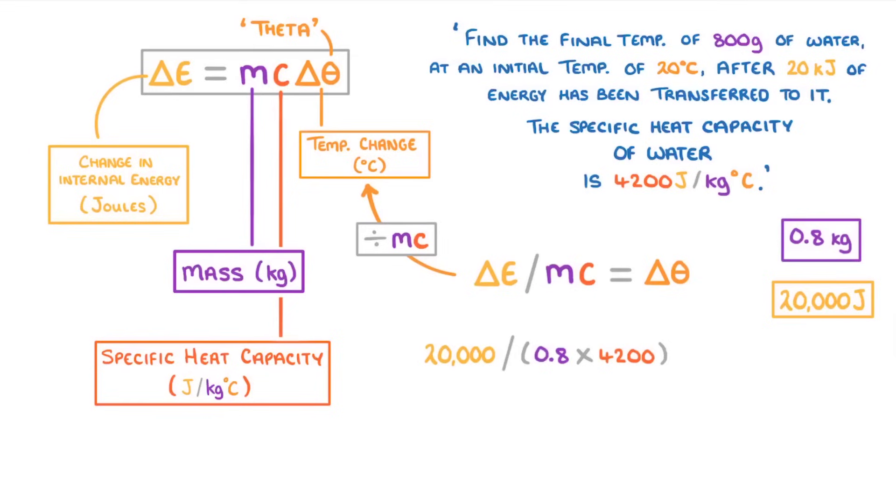So overall we get a temperature change of 5.95 degrees. And if we add that onto our original 20 degrees, the final temperature would be 25.9 degrees. Or 26.0 degrees if we round it to three significant figures, which we generally should.